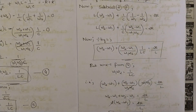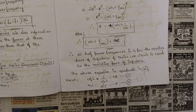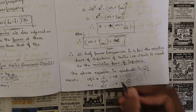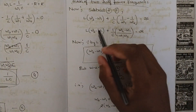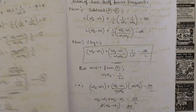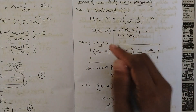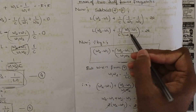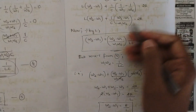Now I subtract Equations 2 and 3. The reason we subtract — rather than add — is that now we need the resistor term R to remain. Subtracting gives: (R) − (−R) = 2R on the right-hand side. Solving the left-hand side using LCM, then dividing the whole equation by L to eliminate L directly.